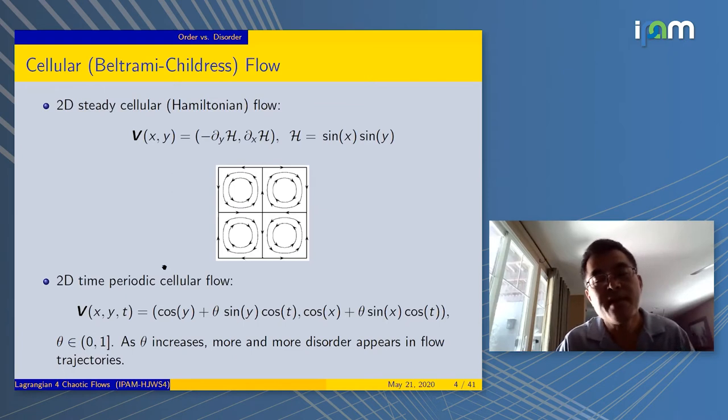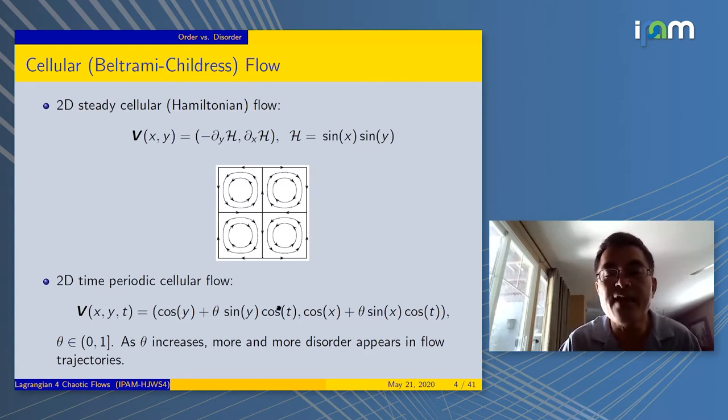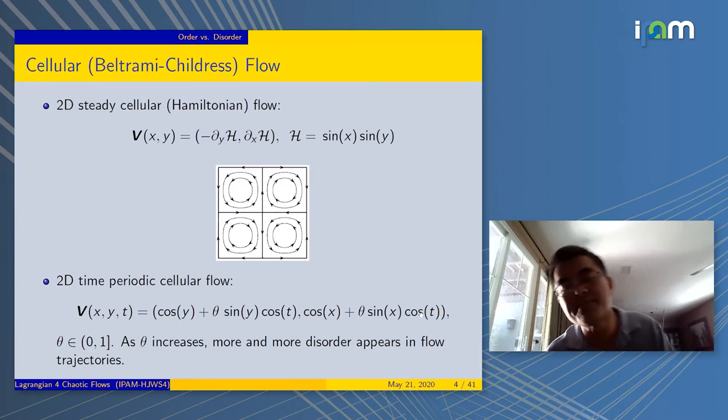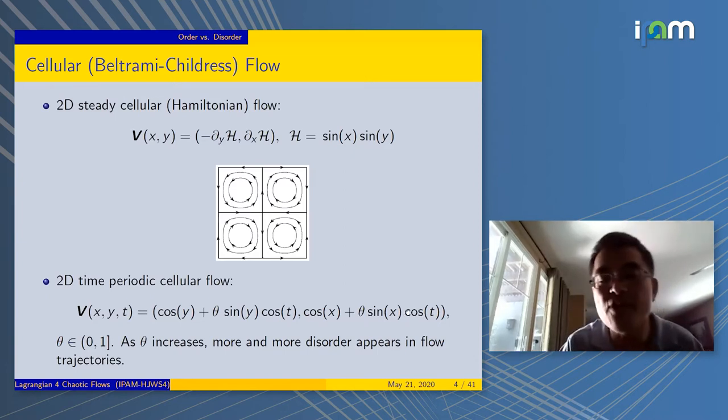Now let's look at a related flow which has the following form. The first term is the steady part, cosine y and cosine x. Then there's a phase shift π/2, you turn cosine to a sine, and multiply that by cosine t. The flow field becomes time periodic. There's a parameter θ in front.